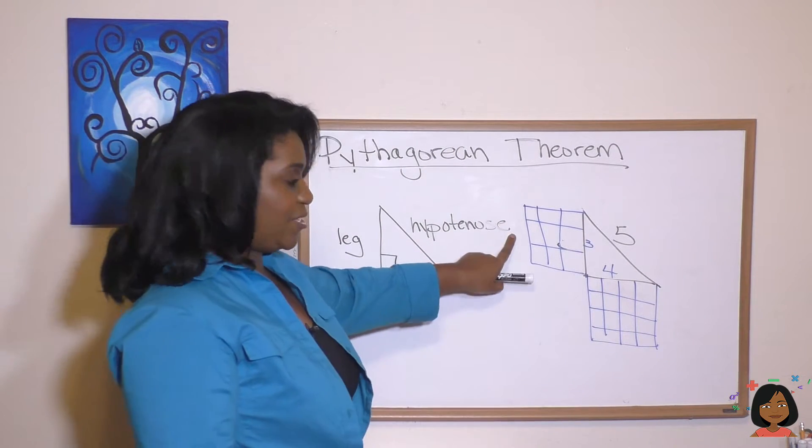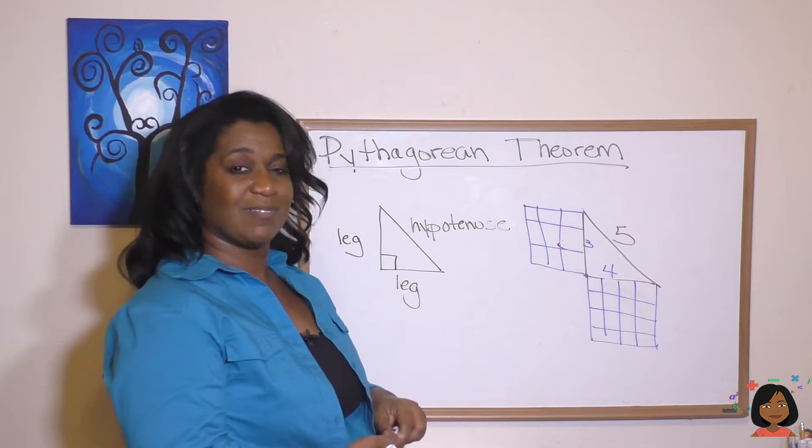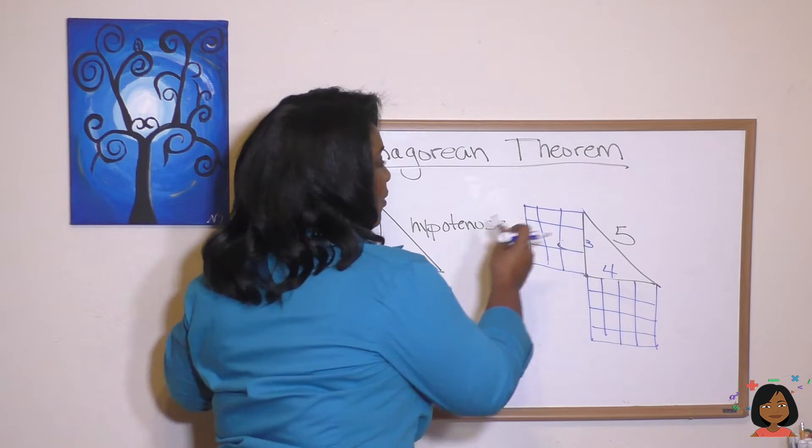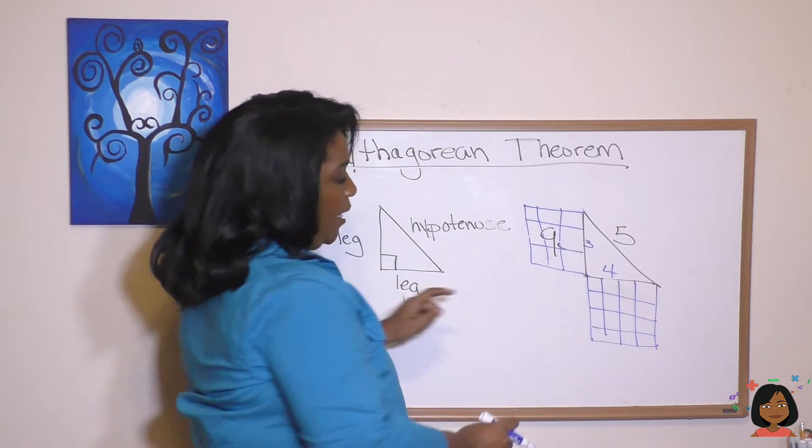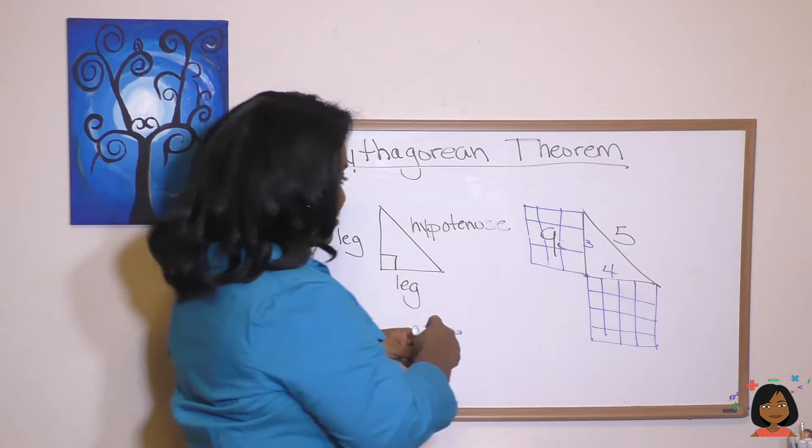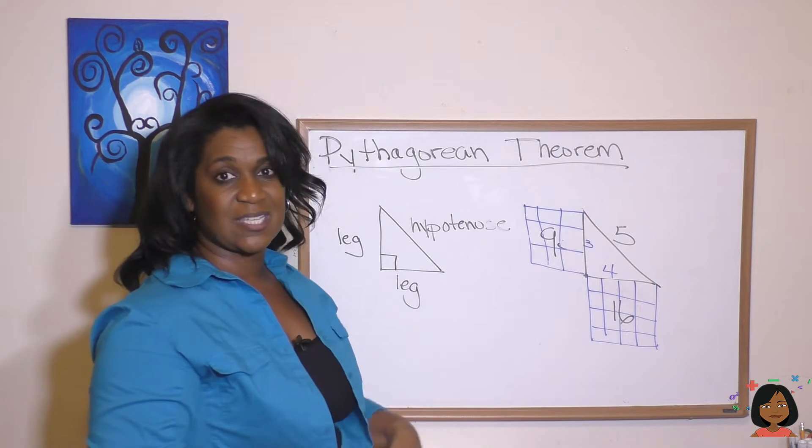He said that if you add this one plus this one, it's going to equal that one. Well, let's count. 1, 2, 3, 4, 5, 6, 7, 8, 9. So we have 9 here. And 1, 2, 3, 4, 5, 6, 7, 8, 9, 10, 11, 12, 13, 14, 15, 16. Yes, we have 16 here.